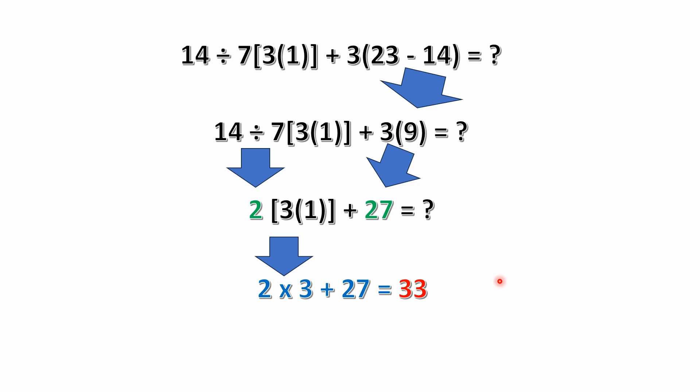So here what we've got is if we continue on with this problem, we go ahead and subtract the 23 minus 14. Well, that is 9. We're going to have 3 times 9. Again, implicit multiplication. Over here we have 14 divided by 7. We would do that next. 14 divided by 7 is 2.